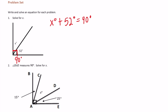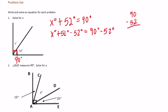To get x by itself, we need to subtract 52 degrees. So we'll have x degrees plus 52 degrees minus 52 degrees — that gets x by itself. What we do to the left, we must do to the right: 90 degrees minus 52 degrees equals 38 degrees. So x is equal to 38 degrees.